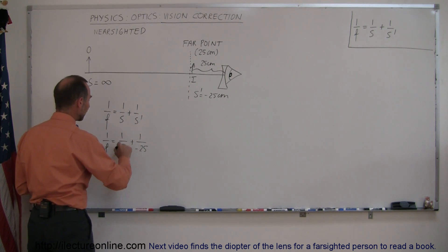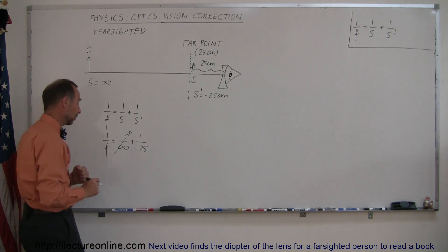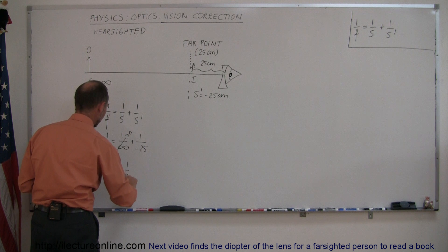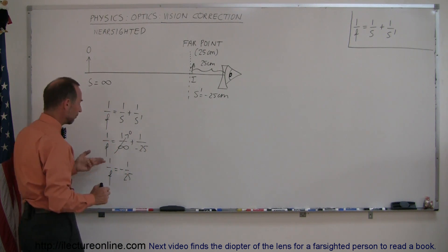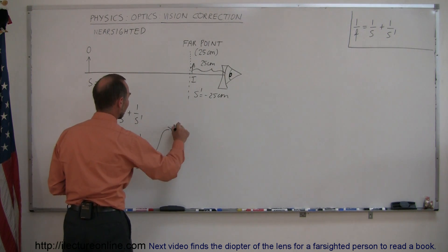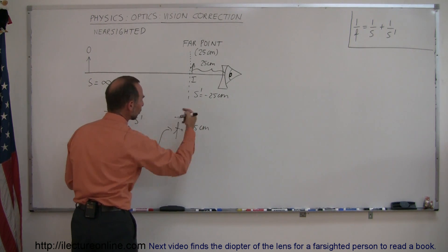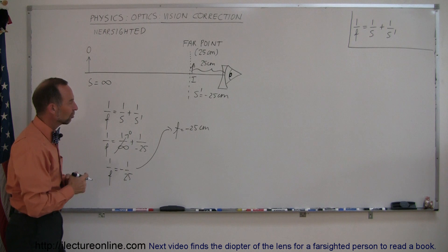Of course, 1 over infinity, that is zero. Anything divided by infinity is always zero. So we have 1 over F is equal to minus 1 over 25. So if we then invert this equation, we get F is equal to minus 25. And of course, that's centimeters because we indicated the image distance in centimeters.